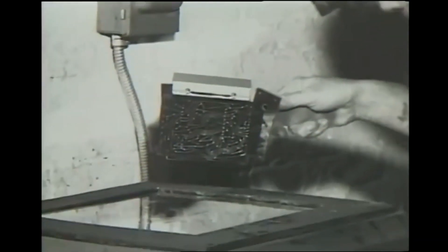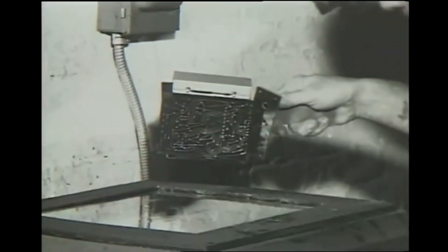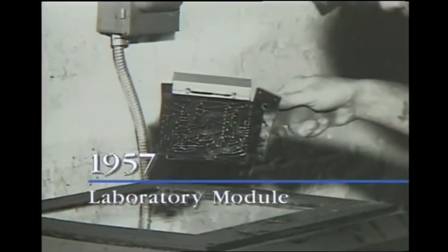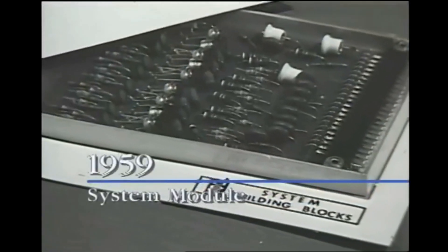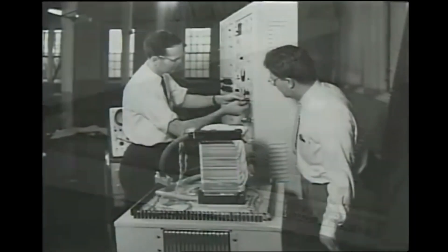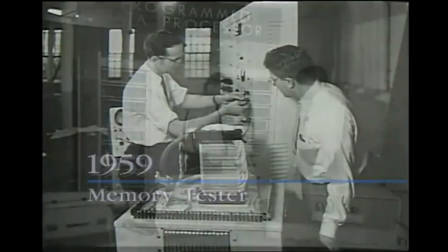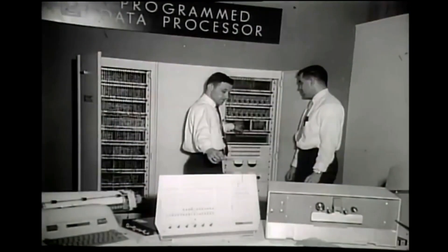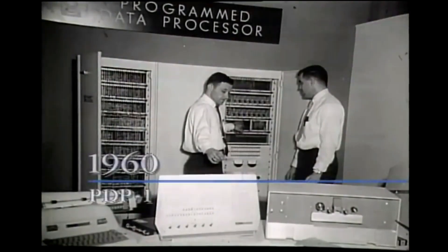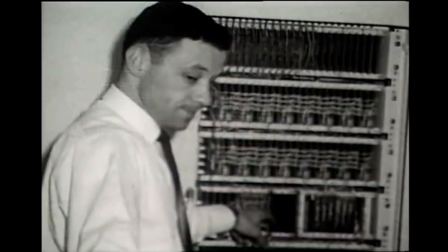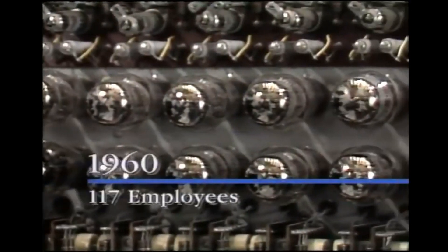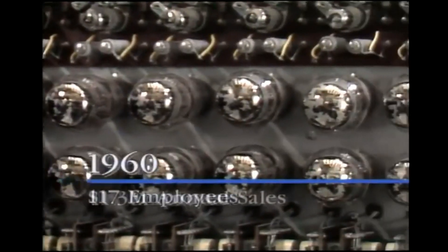With no money to be made in computers, Digital described the first products as laboratory modules, then system modules and memory testers. But the work was progressing steadily toward the 18-bit PDP-1, which was patterned after Lincoln Lab's early transistorized computers, the TX0 and TX2.